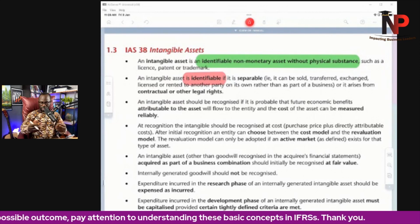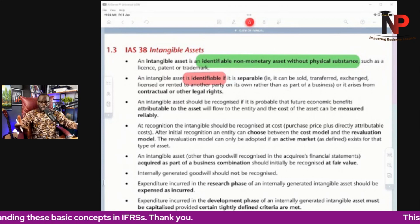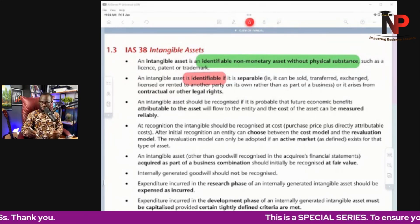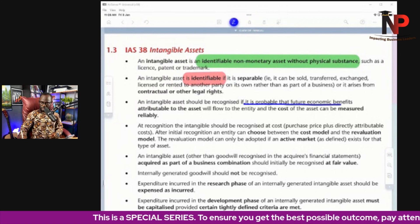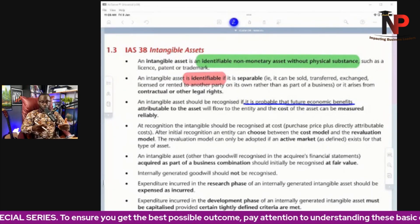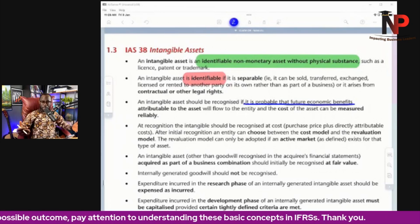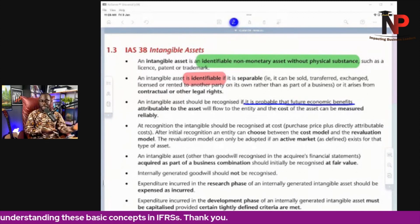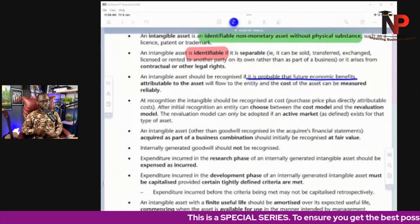A question we need to ask ourselves is what is the recognition criteria for intangible assets? It's the same thing as we did in IAS 16. We recognize intangible assets if it is probable that future economic benefits attributable to the asset will flow to the entity and that the cost of the assets can be measured reliably. That was the same thing we mentioned under IAS 16 property, plant and equipment.